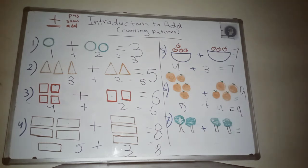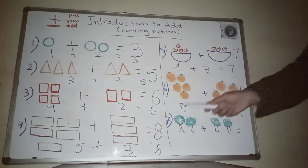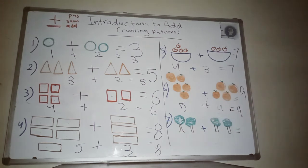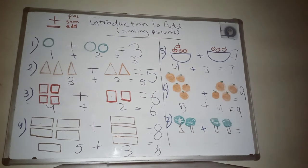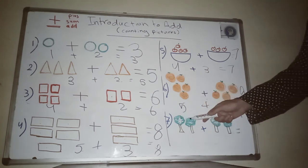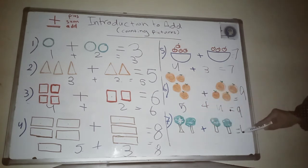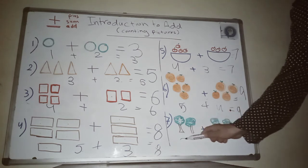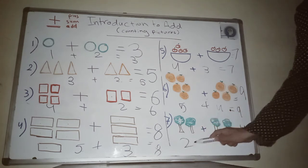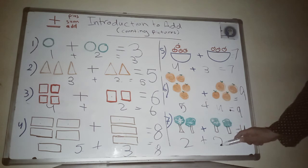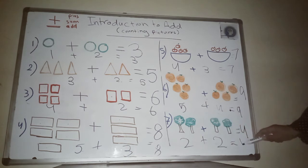The last example: I have two trees and two more trees. How many trees do we have? Let's count — one, two, three, four. I have four trees. So two plus two equals four.